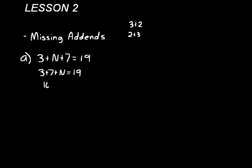Three plus seven is ten, plus what, we think to ourselves, equals nineteen. Well, ten plus nine would equal nineteen. So that tells us that N equals nine, and that's our answer.